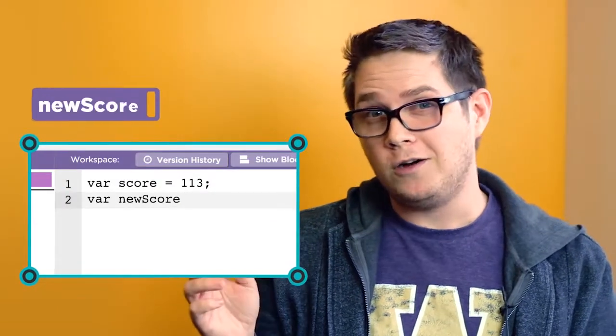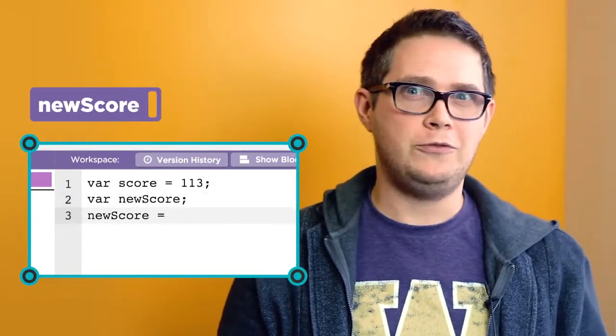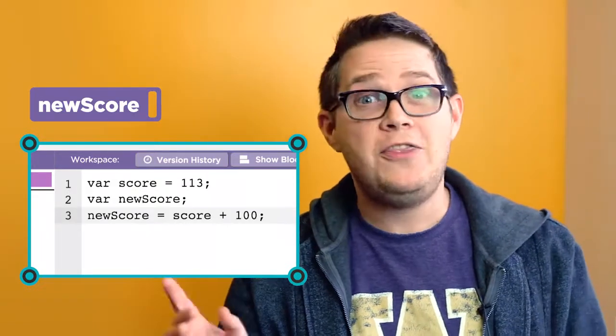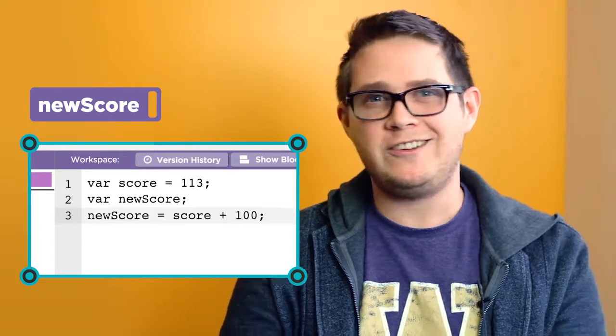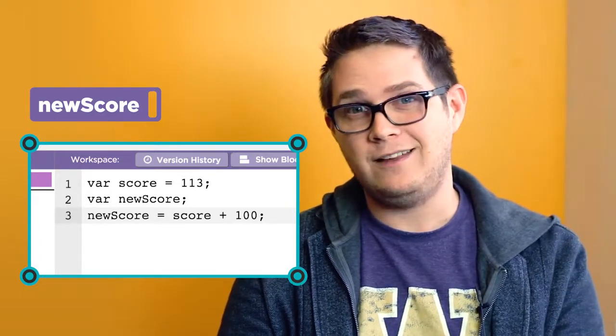var new score, new score equals score plus 100. With this code, we're creating a new variable called new score, but we're not just assigning it a number like we have in the past.